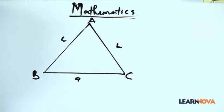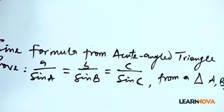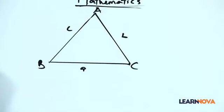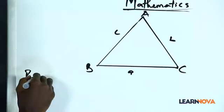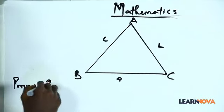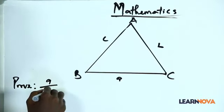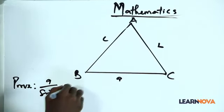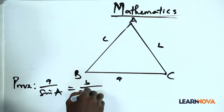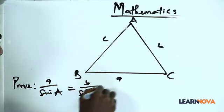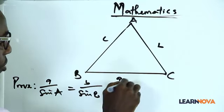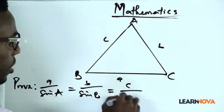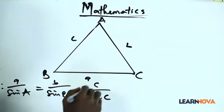Now if we are asked to prove — don't forget we are asked to prove this — we write what we have to prove: a over sin A equals b over sin B equals c over sin C.